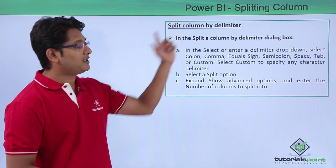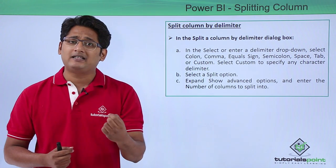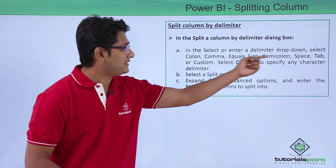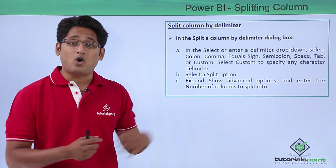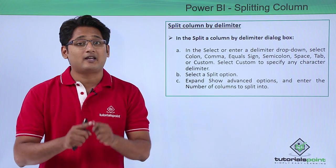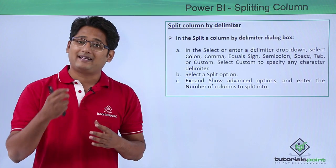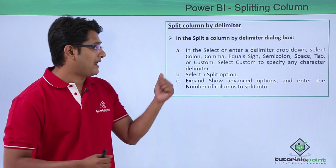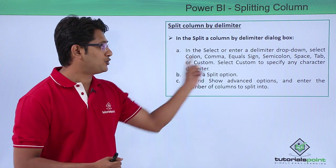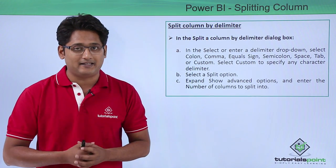For the delimiter method, once we have a column with certain delimiters — such as commas, equals signs, semicolons, colons, or spaces — those are the delimiter types we can use to split the column. Simply right-click on the column, click Split Columns, and choose the delimiter option. Select the proper delimiter and it will split the column very easily.